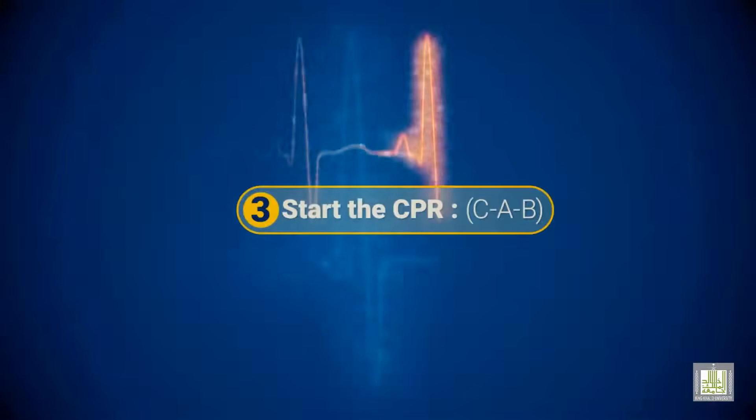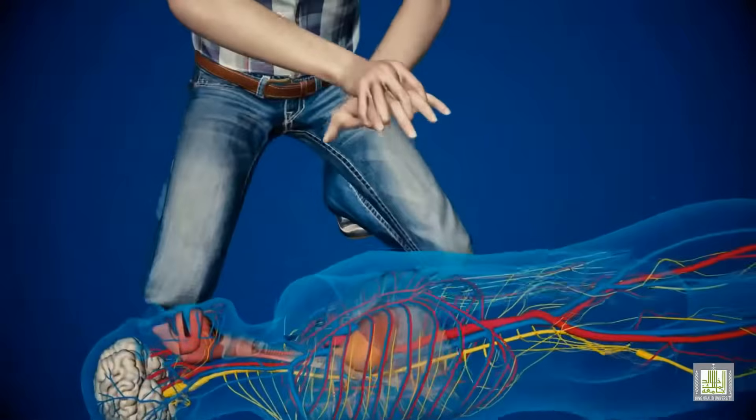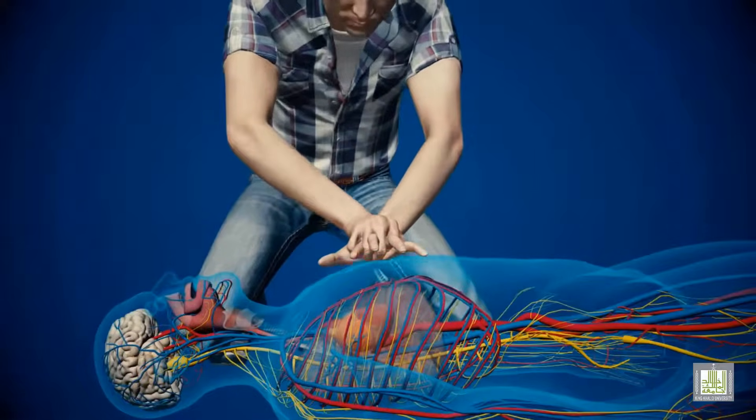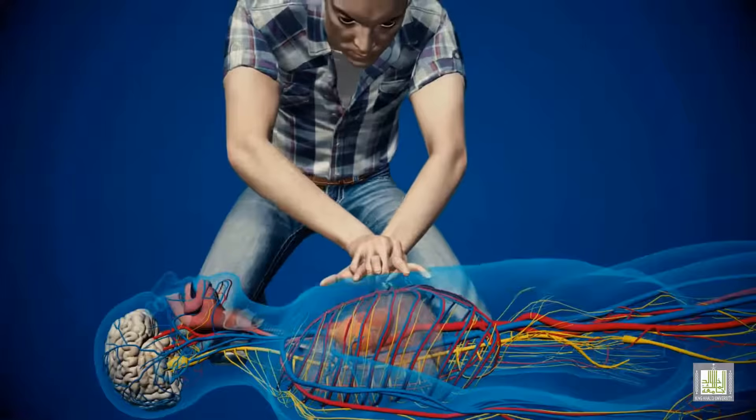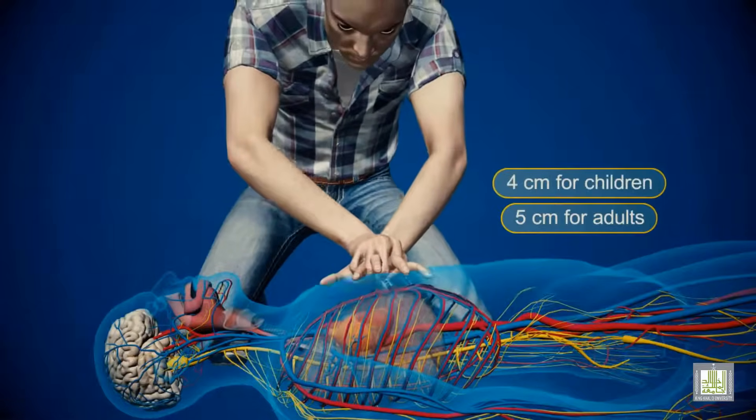Start the CPR: C-A-B. C is compressions. With both of your hands, compress on the middle of the victim's chest as shown in the picture at a depth of 5 centimeters for adults and 4 centimeters for children, for at least 100 compressions per minute.